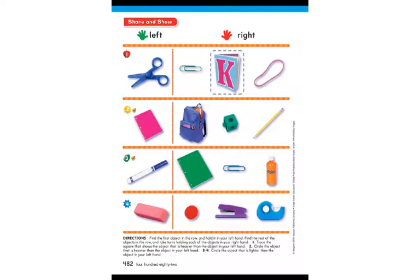We are going to continue comparing objects. These are objects that you might find in a classroom. If you have these objects at home, you can hold the object in your hand to compare the weight. For now, we're going to do the best we can to imagine holding these objects. We can start with number one. If you have a pair of scissors, hold them in one hand — your left hand. Then find either a paper clip, a book, or a rubber band in your right hand, and find which object is heavier than the scissors.